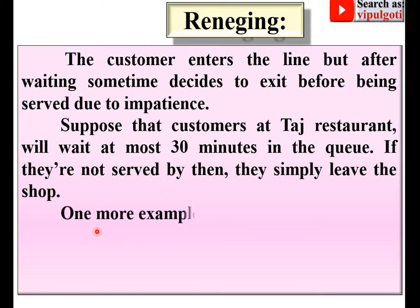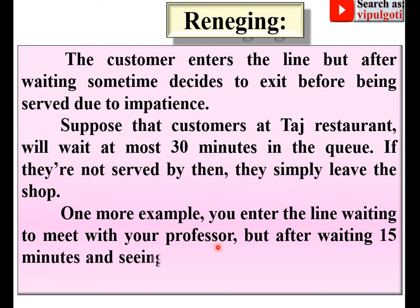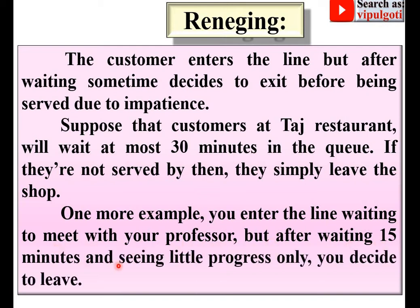One more example: you enter the line waiting to meet with your professor, but after waiting 15 minutes and seeing only little progress, you decide to leave. That is, if you are waiting to meet your professor and after 15 minutes you see little progress, you may decide to leave the queue — that is called reneging.